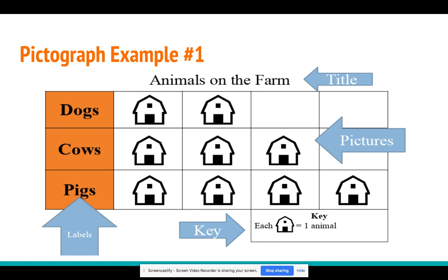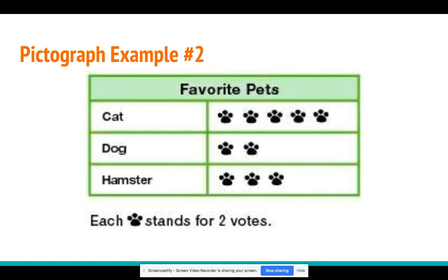Let's look at another example. This example is talking about our favorite pets — that's my title. My labels are cat, dog, and hamster; those are my three types of favorite pets. The picture or symbol that represents each one of those is a paw. But unlike the barn, each paw stands for two votes. So if I was to say how many people said cat was their favorite pet, we would count the paws — we have to count by twos: two, four, six, eight, ten. Ten people voted for cat as their favorite pet.